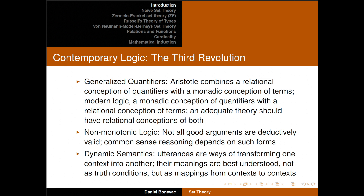The third revolution in logic is something that occurred near the end of the 20th century, and has been going on in the 21st century. It involves the development of a theory of generalized quantifiers. Aristotle combines a relational conception of quantifiers with a monadic conception of terms; modern logic, a monadic conception of quantifiers with a relational conception of terms. People have begun to realize an adequate theory really needs both — relational conceptions of both quantifiers and terms. That requires going beyond Aristotelian logic and beyond modern quantification theory to develop a logic of concepts like 'most,' 'all but finitely many,' or 'all but countably many.' This has been done largely by mathematicians, but also by logicians and philosophers over the second half of the 20th century.